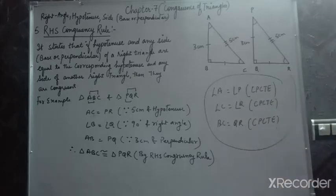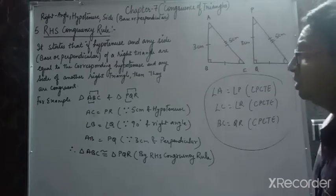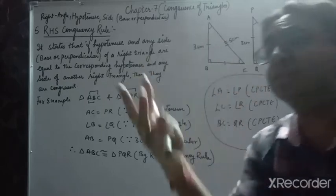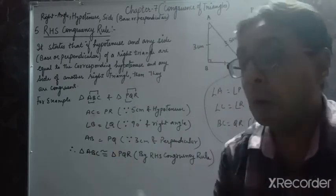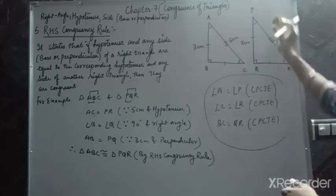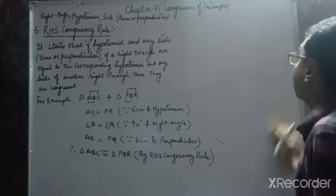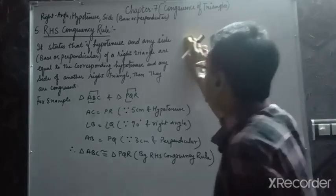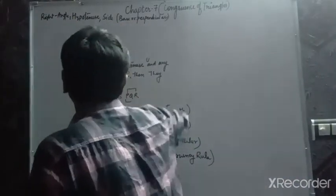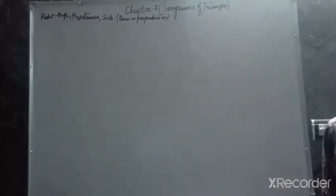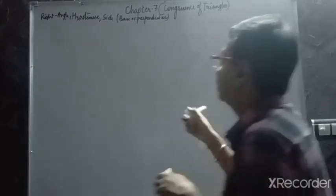Are we clear with RHS? With this, our congruency topic is over. But nobody asked me: we have considered all things, even 3 sides. Why are we not considering 3 angles? I'll explain why we do not consider AAA — that is, angle, angle, angle. That congruency does not hold good.